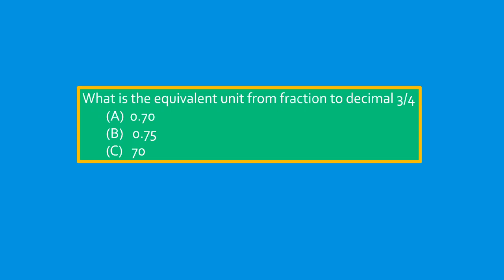Next. What is the equivalent unit from fraction to decimal? 3/4. A, 0.70. B, 0.75. C, 0.70.